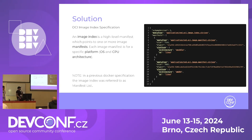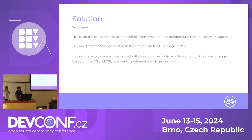In the previous Docker specification, the image index was referred to as manifest list. That's why in the title of the talk we say OCI image index or manifest list. But in the OCI standard, it's image index. In summary, to build containers for multi-platform, we need to build the container image for each platform, OS, and CPU architecture the software is going to support. Then we add the manifests generated in step one into the OCI image index. This allows tools like Podman and Docker to pull the correct image based on the OS and CPU architecture where the tools are running.